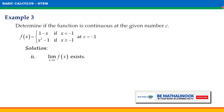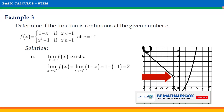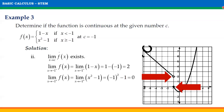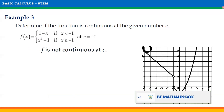For the second condition, the limit of f(x) as x approaches C must exist. From the graph, as x approaches −1 from the left, the function approaches 2. Since the limits from the left and right are not equal, the limit does not exist, and condition 2 is not satisfied. There is no need to check condition 3 since condition 2 is already not satisfied.